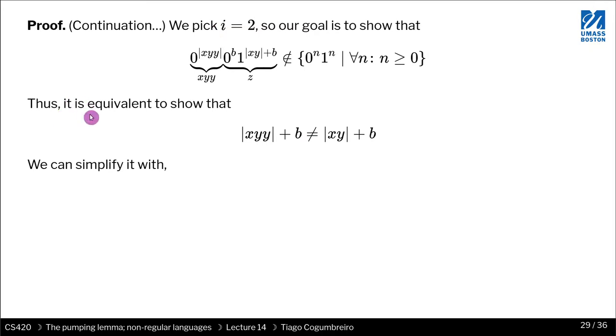If we want to prove this, it is enough to show that the powers—the power of zero has to be different than the power of one. So if we add x to y, y, and then B, this portion, if we can show that that is different than x, y plus B, then it entails that the string does not belong in L₁, which is what we're trying to prove.